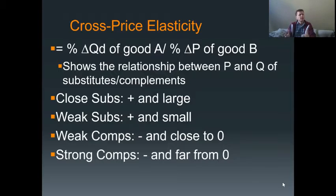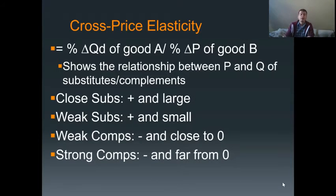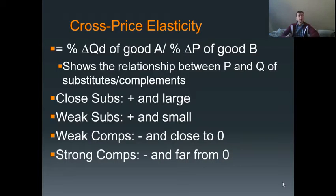If you think about it, that makes a lot of sense, because the idea of a substitute is that when the price of the substitute increases, demand for the other one increases. So what you're looking at with cross price elasticity is if there is a positive relationship — a positive cross price elasticity — then you have substitutes. Looking at positive versus negative is how this is going to work. If there is a larger number, a number further away from zero, it lets you know how close of a substitute it is. A small positive number means it's a weak substitute. If there's a large change, they're very close substitutes — a larger cross price elasticity, still positive.